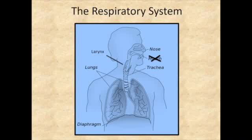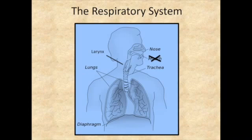The respiratory system encompasses several organs, not just the lung. We're also going to talk about the pathways that air gets to the lung, starting with the nasal cavity, then the pharynx, then the larynx and the trachea, and then we're finally down to the bronchi and into the parenchyma of the lung.